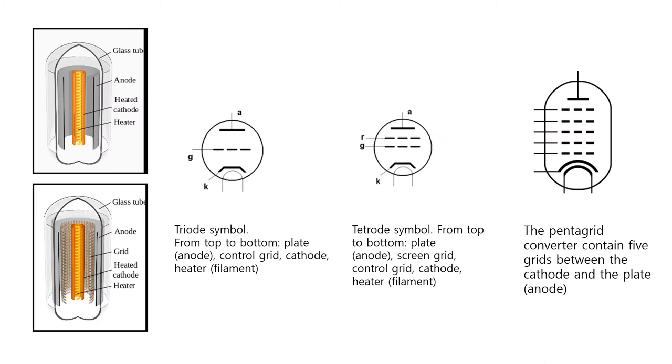Here in this slide, the schematic diagrams of a diode and a triode have been shown on the left hand side. Besides this, symbols for triode, tetrode, and pentagrid have also been shown. In a triode symbol from top to bottom are shown plate or anode, control grid, cathode, and heater filament. In a tetrode symbol from top to bottom are plate anode, screen grid, control grid, cathode, and heater filament. A pentagrid converter contains five grids between the cathode and the plate anode. This is quite a complicated structure to fine-tune the electricity passing through it.